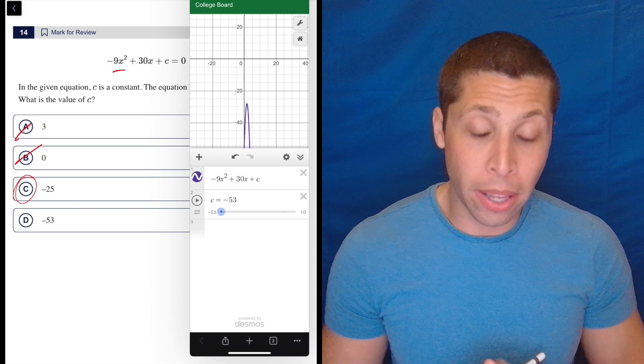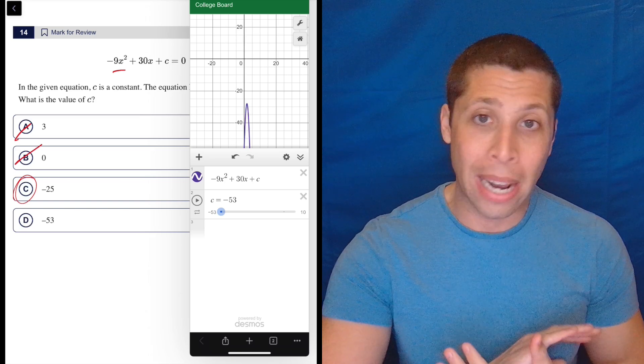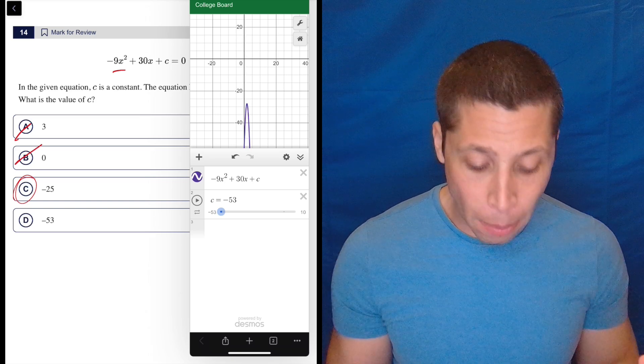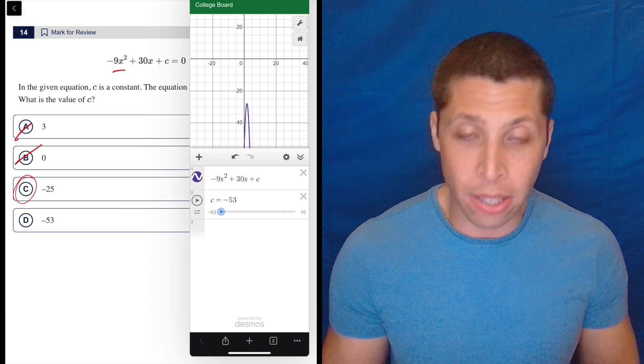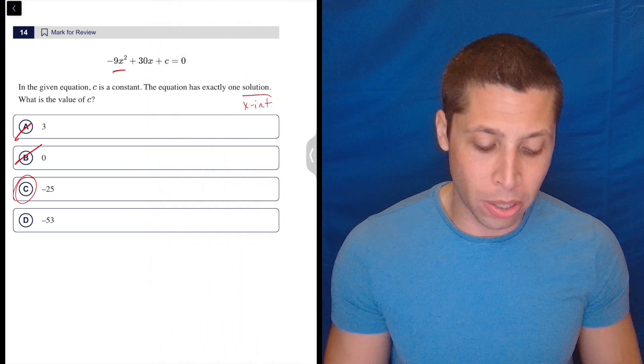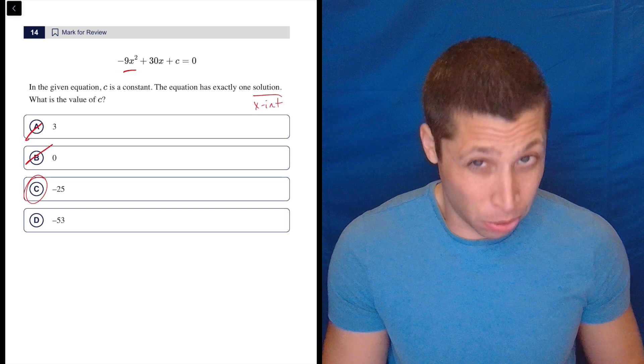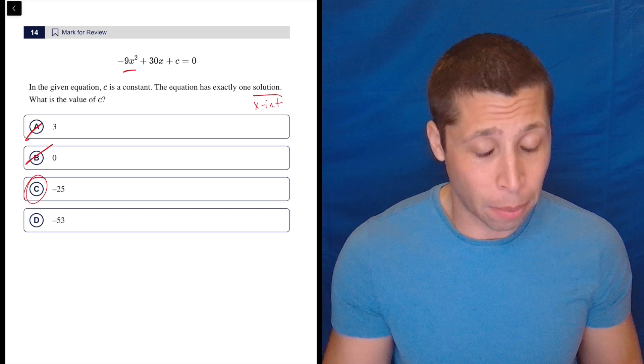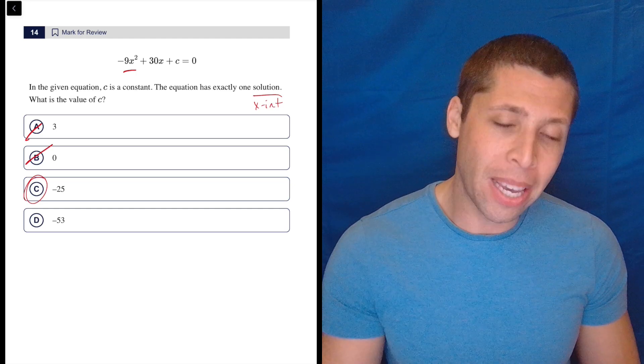So I would definitely do it that way. The guess and check here just means I don't have to worry about algebra at all. I still need to conceptually understand what I'm looking for, which is an x-intercept basically. But yeah, because they gave me answer choices, this is not particularly hard. You're just looking at a picture.